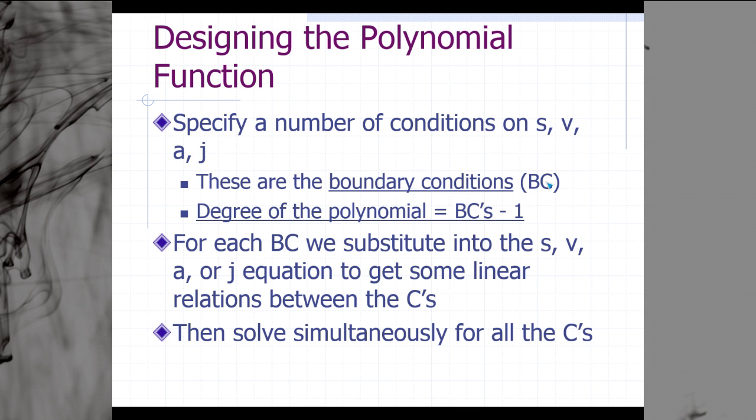So if we have six boundary conditions, we will have a polynomial of degree five. For each boundary condition, we're going to substitute into the s, v, a, or j equation to get some linear relationship between the constants, or between these various c's. We'll be hoping to see that if we have four c's that we need to determine, we will have four equations, in which case we can then solve simultaneously to get the values of each of the c's.